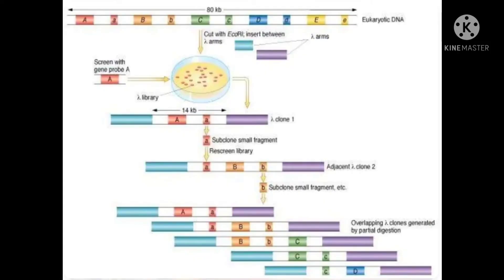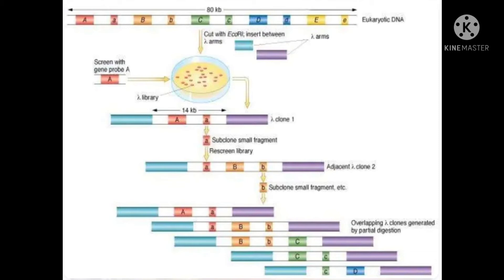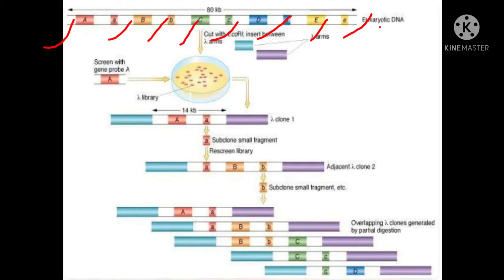Look at this picture carefully for better understanding. This is a eukaryotic DNA of around 80 KB in size. 80 KB is a very large sequence, and if we want to map such a long chromosome we use markers — markers are nothing but pieces of sequence. From this larger DNA fragment we take a short segment of DNA with the help of restriction enzymes. Observe the picture: we have different sets of genes.